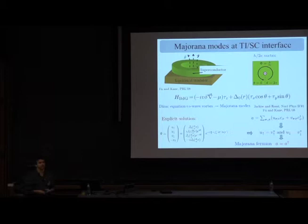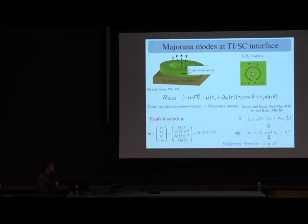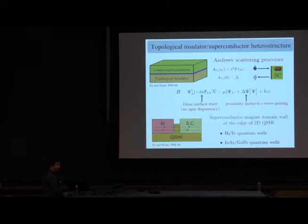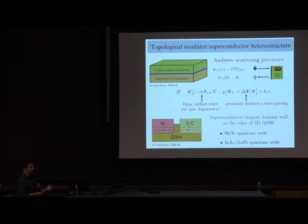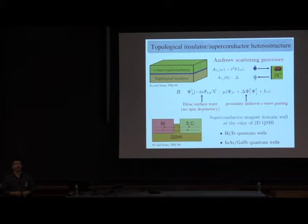Q: How is Andreev reflection included in the Hamiltonian? A: The Δ·c↑↓ term is essentially Andreev scattering. Using the low-energy approximation for the scattering process at zero frequency, one can write an effective Hamiltonian valid at energies well below the gap. Since we are looking for a zero-energy state, this approximation is valid.